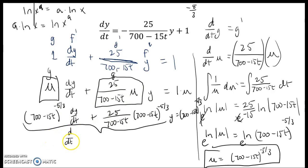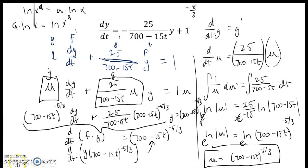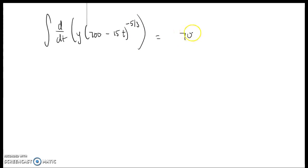Next I want to untangle this and write it as the derivative of f times g equals 700 minus 15t to the negative 5 thirds. So f is my y, meaning y times 700 minus 15t to the negative 5 thirds, and the derivative of that has to equal the right-hand side. I'm going to integrate both sides: the integral of the derivative of y times 700 minus 15t to the negative 5 thirds equals 700 minus 15t to the negative 5 thirds, both with respect to t.